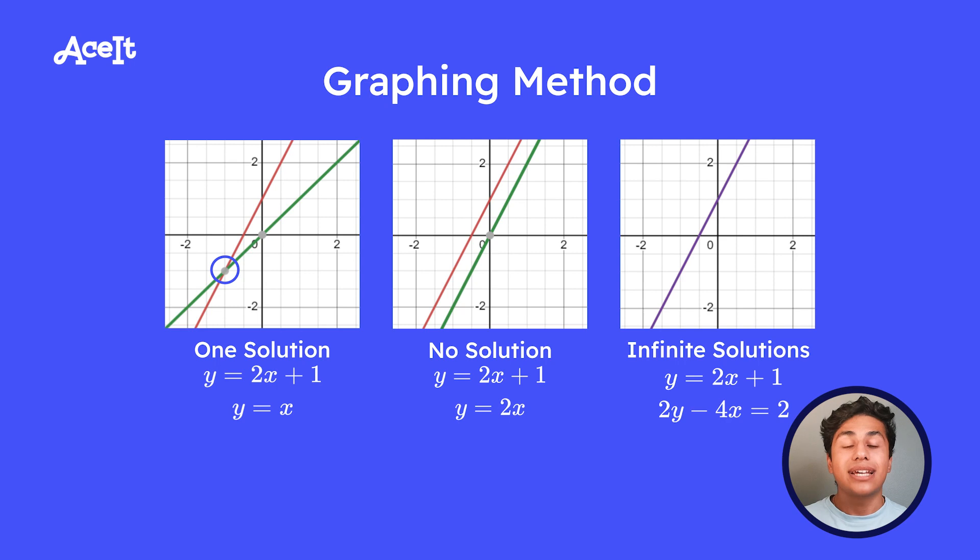Now our third and final case is infinitely many solutions. This is when the system is the same equation. So we have y equals 2x plus 1 and 2y minus 4x equals 2. They are the same line. So if you notice, if you rearrange the second equation and then divide by 2 on both sides, you'll realize it's also y equals 2x plus 1. So they're the same line. This means there are infinitely many solutions since the lines would be on top of each other.